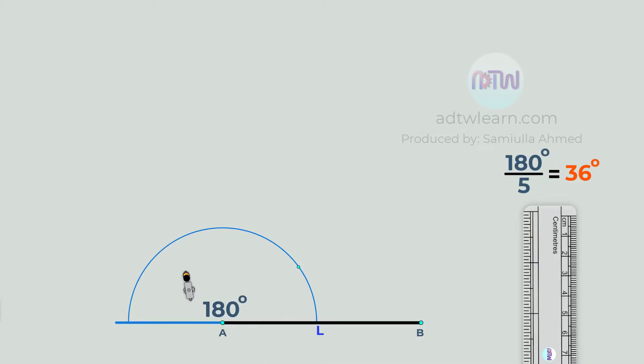Next, take a compass and adjust it to this length, and divide this arc into 5 equal parts.